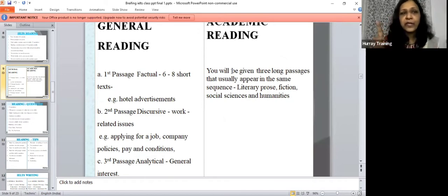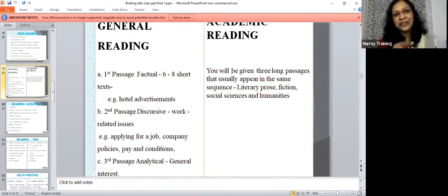There's one mark for every correct answer. But when you convert the raw score to the band score, you see that if you get 40 out of 40 in reading general and academic, you get nine, nine band. In academic, if you get 39 out of 40, also it's a nine band. But in general, if you get 39 out of 40, it's 8.5, because it's not so tough. So that just goes to show that it's a little tougher.